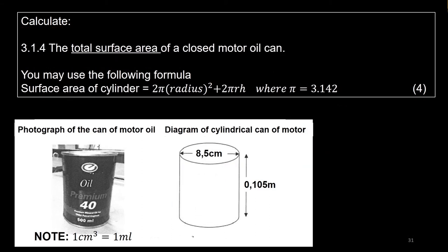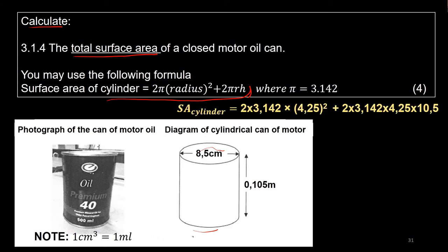Then we move on to the total surface area of the closed motor oil can — the top surface, bottom surface, and side. We are given the formula. Substitute the values: radius and height, square the radius, put it all into the calculator. The answer you should get is 393.93 cm². Remember, units for surface area are centimetres squared — units are very important.